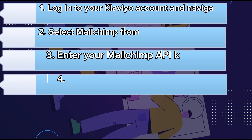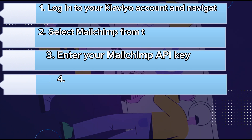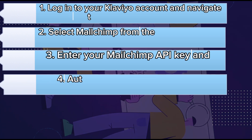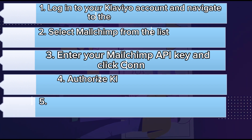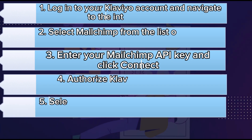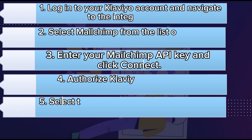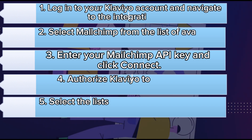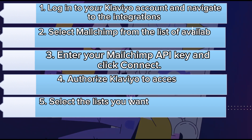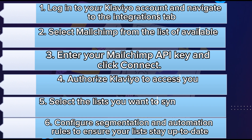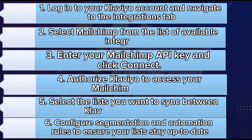Step 4: Authorize Klaviyo to access your MailChimp account. Step 5: Select the lists you want to sync between Klaviyo and MailChimp. Step 6: Configure segmentation and automation rules to ensure your lists stay up to date.